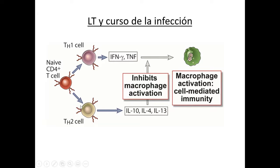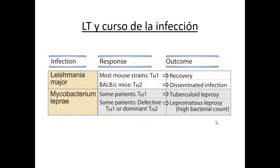Si hay una respuesta helper 1 con producción de interferón gamma y factor de necrosis tumoral, la respuesta por macrófagos va a ser adecuada, habrá buena respuesta celular y, para el caso de la lepra, las lesiones van a estar circunscritas en el tejido. Si hay una respuesta TH2, las interleucinas helper 2 van a bloquear la activación del macrófago y facilitar la proliferación de los gérmenes intracelulares. En el caso de infecciones en ratones por Leishmania, si el ratón tiene buena respuesta helper 1 se recupera; si tiene respuesta TH2 hace formas diseminadas. En el humano, con Mycobacterium leprae, si la respuesta TH1 es buena la forma es tuberculoide; si hay respuesta defectuosa TH2, se hace la forma grave: la lepra lepromatosa.